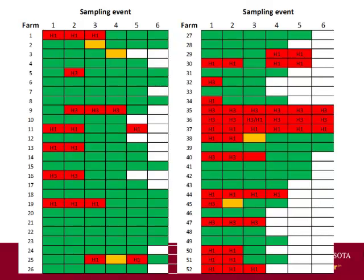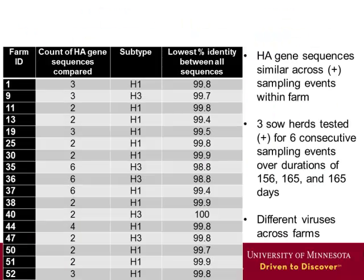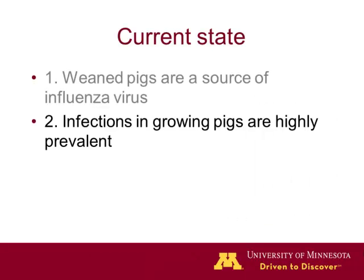We subtyped and characterized the different influenza viruses in those populations. The encouraging thing, at least on the sow farms, is that once they get infected with a type, we didn't see a lot of variation during those six months. So when they are infected with a type of influenza, they remain infected with that type. From a prevention point of view, or thinking about what vaccine to use, that should help to select. This is different from what we see in the post-weaning period.